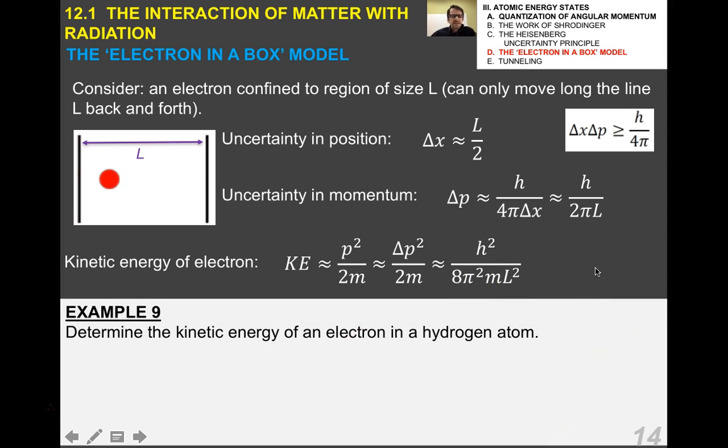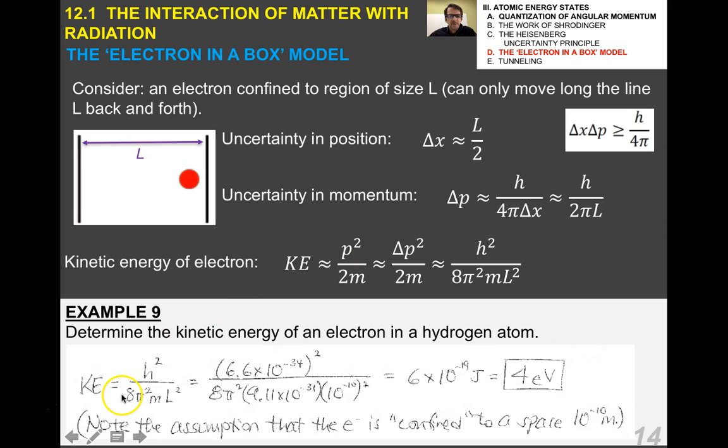Why are we doing this? Because I want to show you how the kinetic energy of an electron in a hydrogen atom actually is the kinetic energy we would expect by using this equation. Putting in the values for the hydrogen atom, we get that the kinetic energy is 6 times 10 to the minus 19 joules, which is about 4 electron volts. Notice that in this case, we assume the electron is confined to a space 10 to the minus 10 meters, as we always do with an atom, because that's about the length of the diameter of any atom.